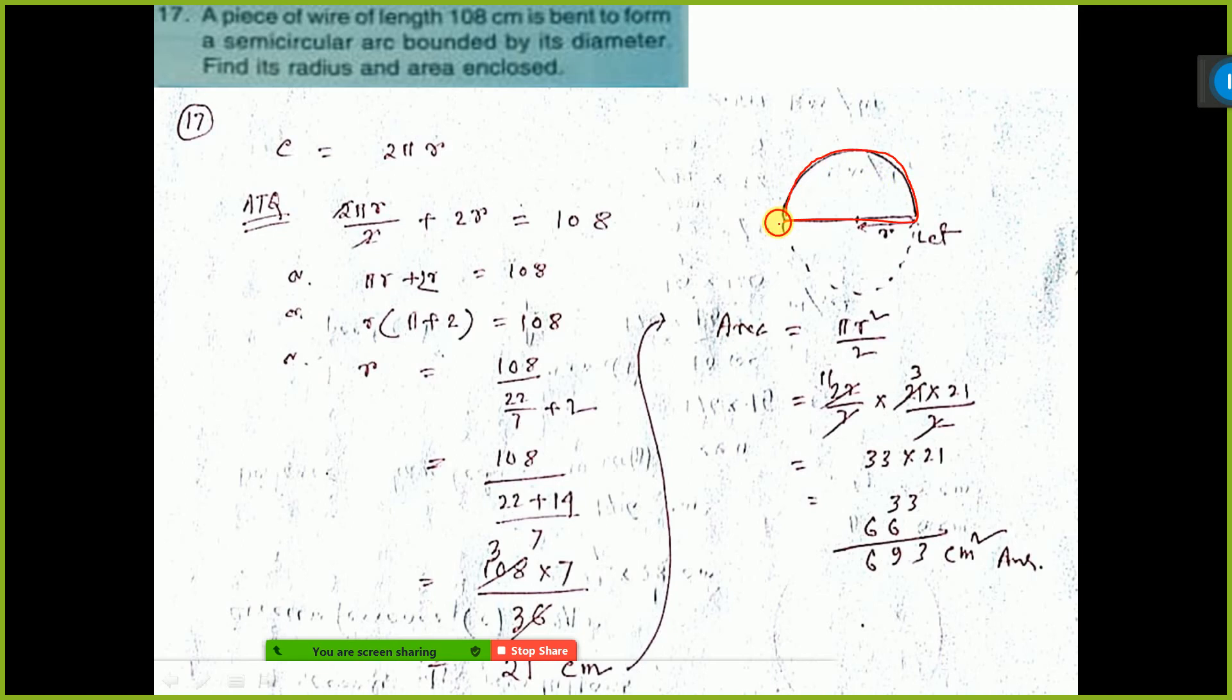It is made by a wire. If you complete the circle, it will come like this. But I have not completed, just dotted line I have given. Now perimeter of this portion, it will be half of circumference plus the diameter.